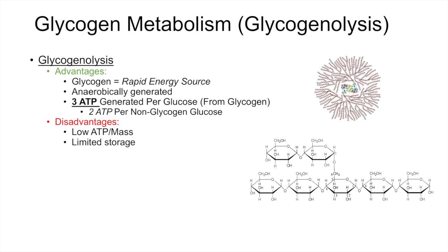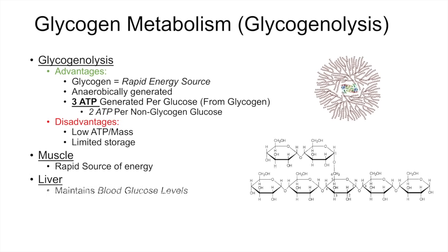Glycogen has separate roles depending on the tissue it's utilized in. In muscle, it is used as a rapid source of energy — during exercise or physical activity, glycogen is used as an energy source in the muscle. But in the liver, glycogen is actually used to maintain blood glucose levels, and this is important during fasting and also during the periods between meals.